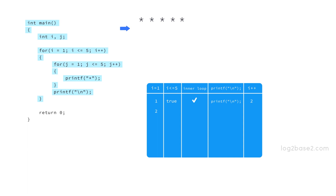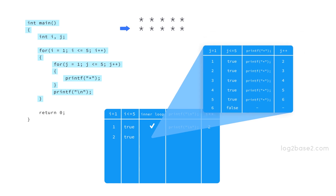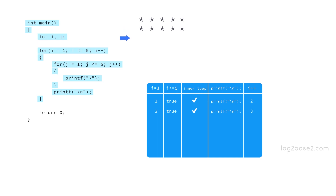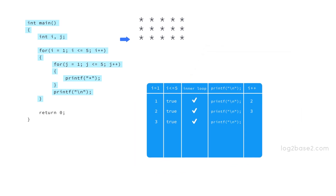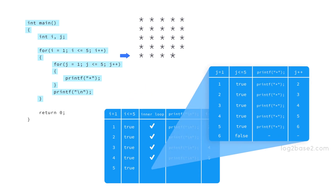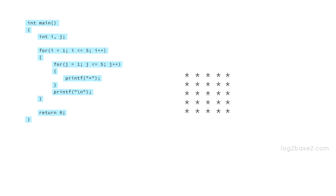Now i equals two and the condition is true, so it goes for the second iteration and in a similar way prints another row of five stars, then prints a new line and increments i. i equals three — condition holds, inner loop prints the third row of stars, goes to next line, increments i. i equals four — same thing, prints the fourth row. i becomes five — condition holds, inner loop prints the fifth row, goes to next line, i becomes six. The condition fails and it comes out of the loop and returns zero. So the inner loop prints a row of five stars in each iteration of the outer loop, and with five iterations, five rows of five stars are printed as the output.